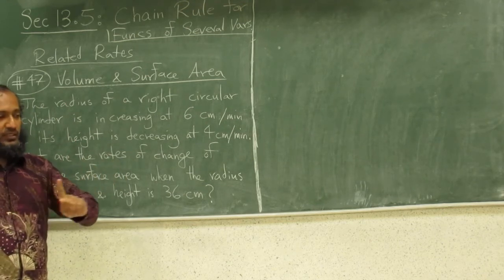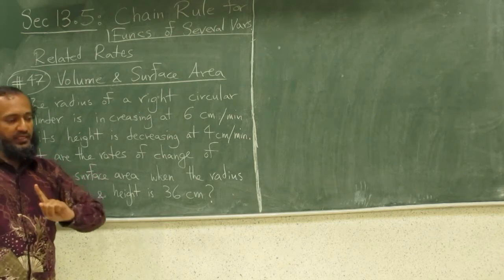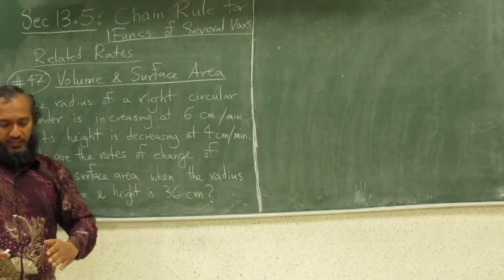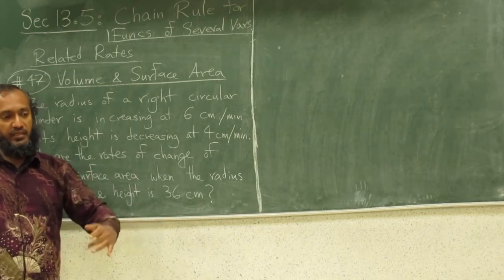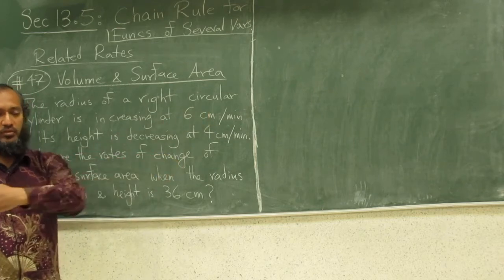What we used to have in related rates is like a man is walking towards the light and given that his speed is this much, how fast is his shadow increasing and decreasing as he walks close to the light and goes away from the light.